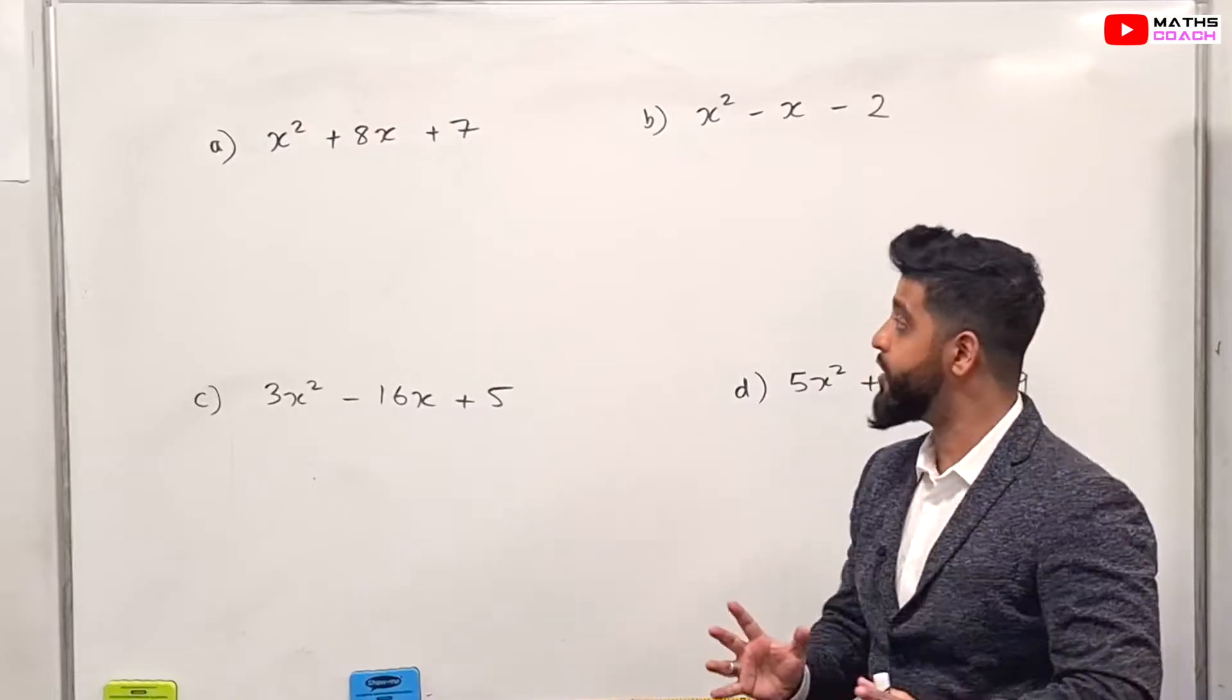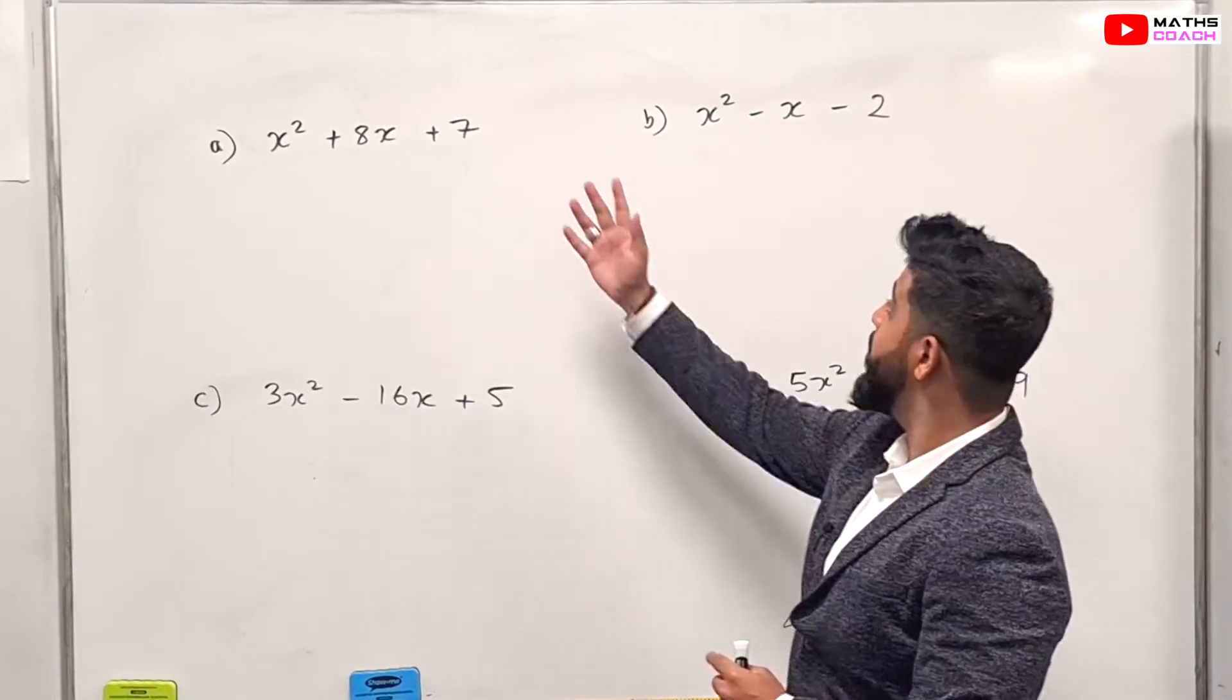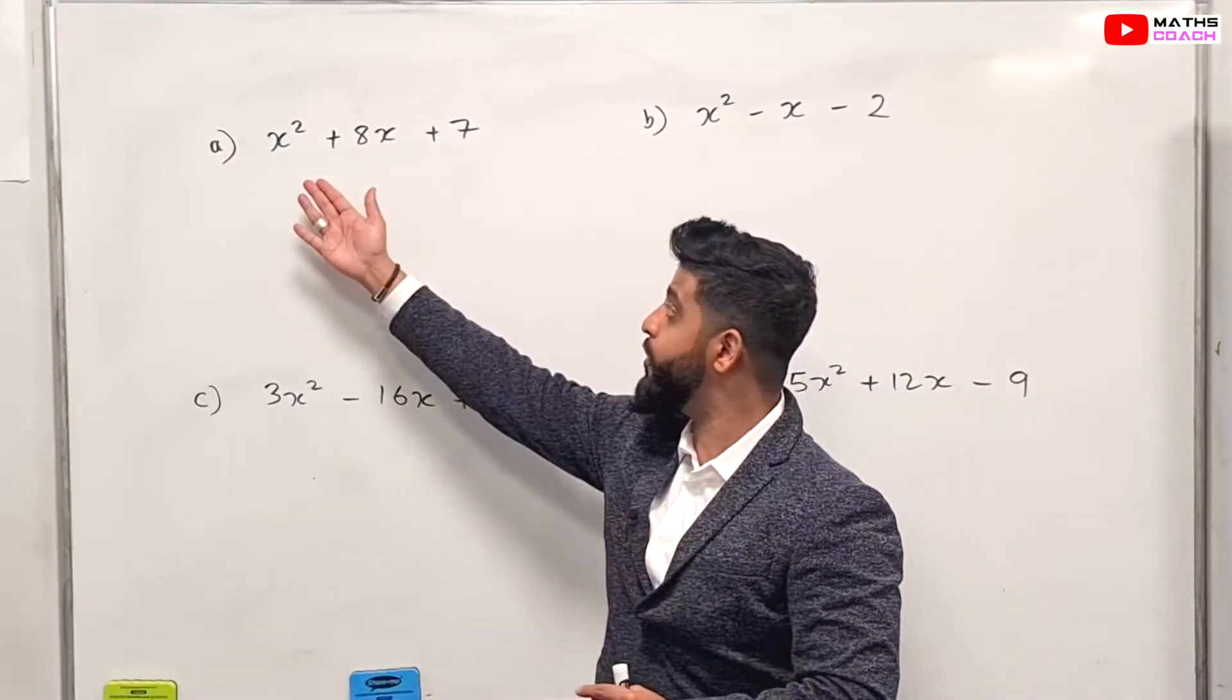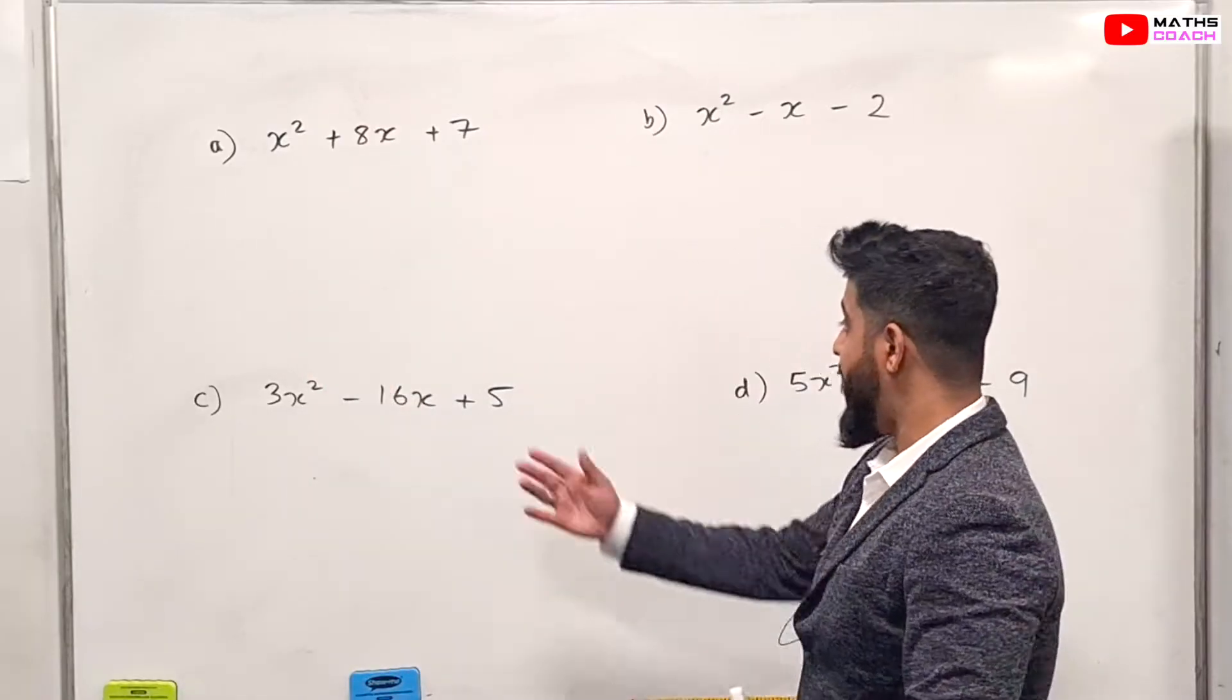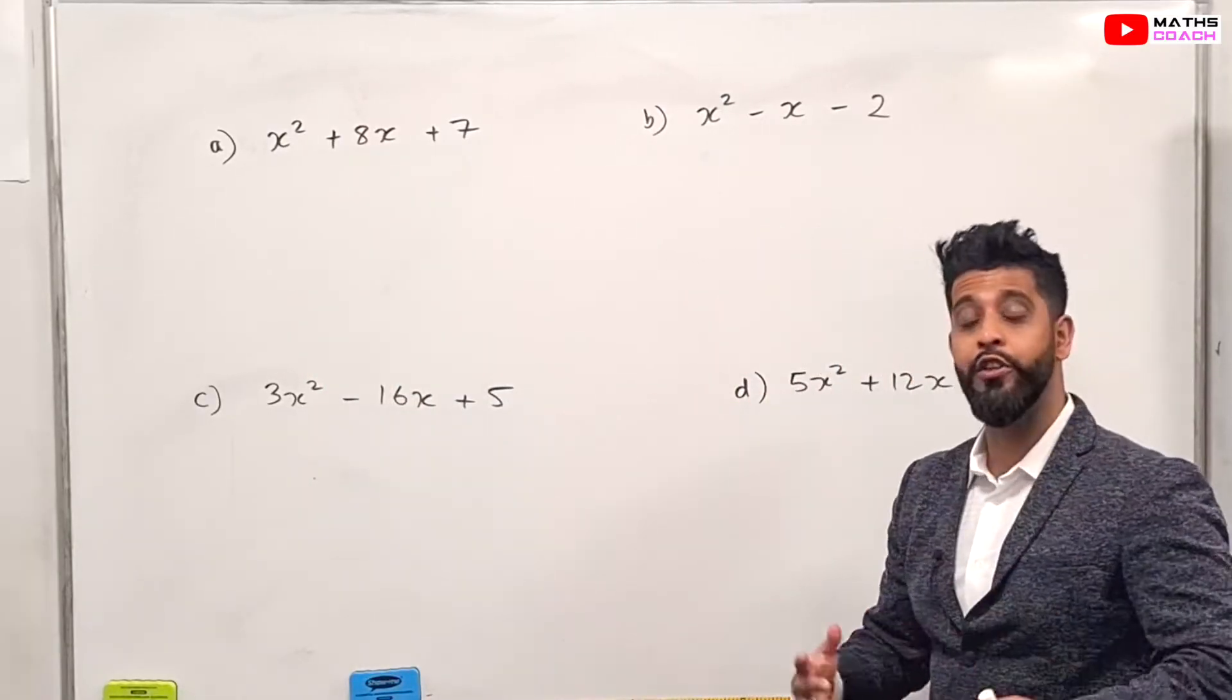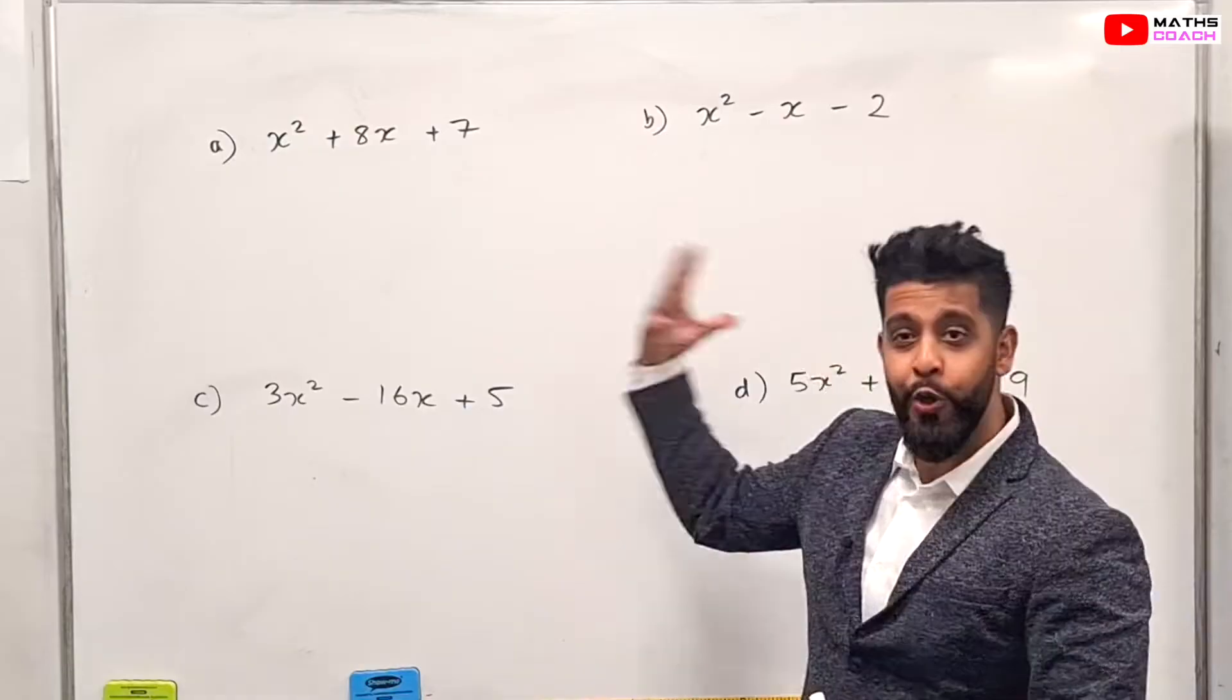Now I've got four different questions to show you this method. Two of those are where the coefficient of x squared is just one, and two of those where the coefficient of x squared is more than one. So on to the first one.